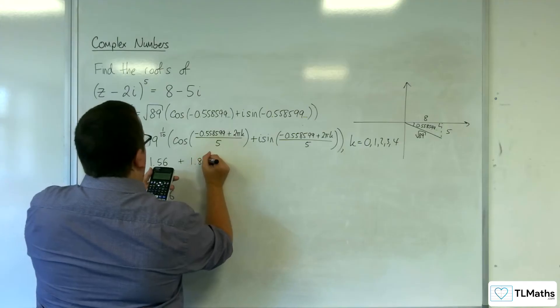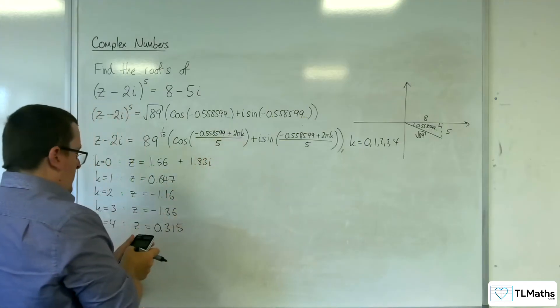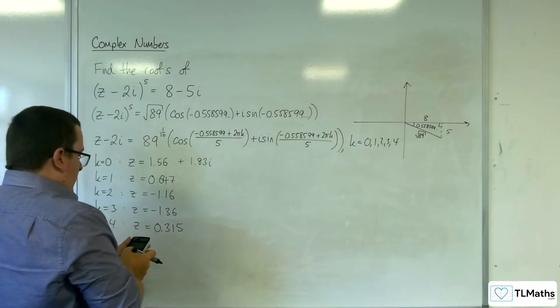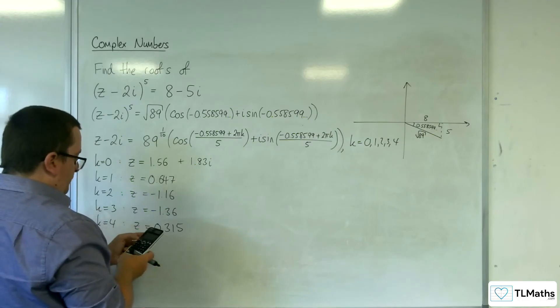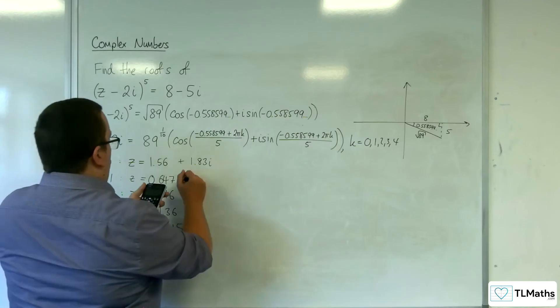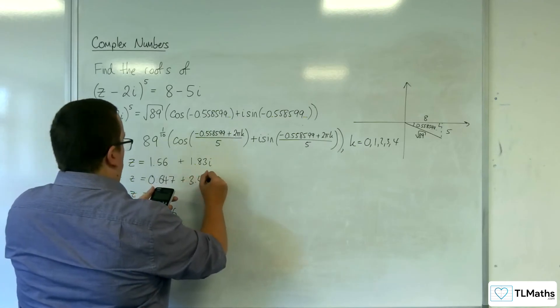Now I need to make sure that I'm adding on 2pi. So k is 1. So then we get 3.43i.